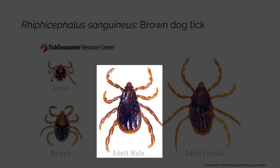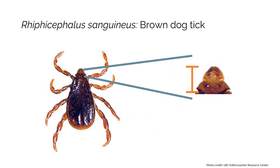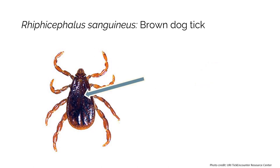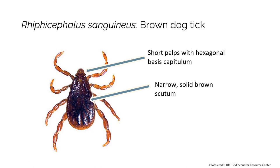Now let's take a look at the adult male brown dog tick. The mouthparts of this species are short and wide, and narrower than the basis capitulum. The basis capitulum is also hexagonal shaped in the male of this species. The scutum is uniformly dark brown and covers the entire length of the body. The body continues to widen throughout and has prominent festoons. The key characteristics for identifying an adult male brown dog tick are: short palps with the hexagonal basis capitulum, and a uniformly dark brown body that widens near the end.